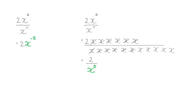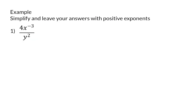Let's have a look at some more examples where we are asked to simplify and leave answers with positive exponents. In number one, everything is already simplified — all we need to do is change the negative exponent to a positive. We focus on the base x; the four and y squared are perfectly fine. Since a negative exponent means we divide by that value, we write x to the power of positive three in the denominator.